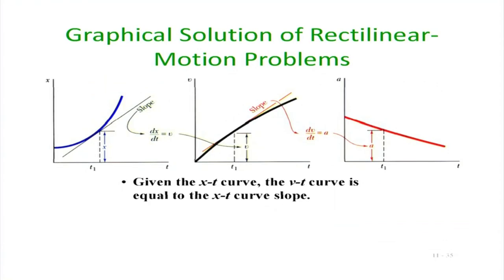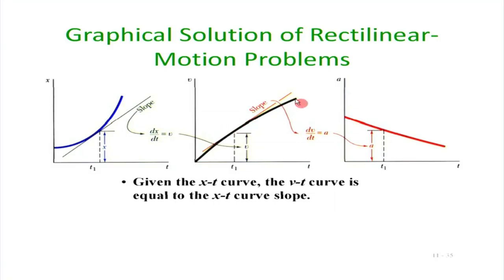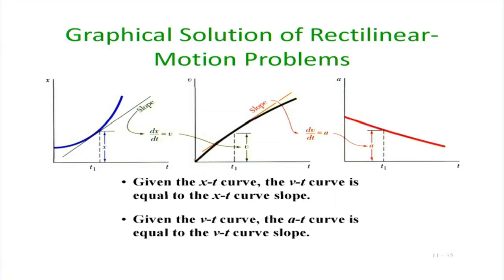One point for graphical solution of rectilinear motion problems: if x is given as a function of t, then the slope is the velocity. If v is given as a function of t, then the area under the curve is the distance travelled. Just keep that in mind.